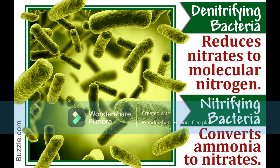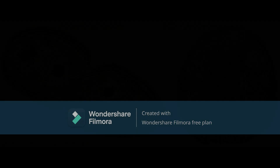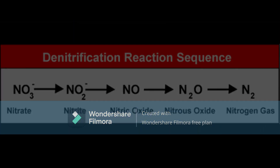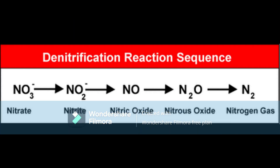Some species of these organisms include Nitrosomonas and Nitrobacter. These bacteria get their energy from the oxidization of inorganic nitrogen compounds like nitrite, nitrate, and ammonium. Denitrifying bacteria are microorganisms that reduce nitrite and nitrate to gaseous forms of nitrogen. Denitrification is a response to changes in the oxygen concentrations of their immediate environment.